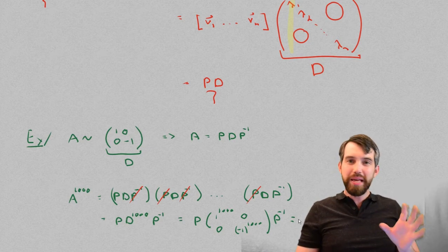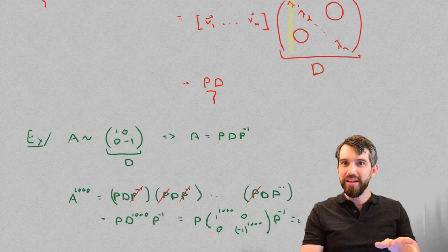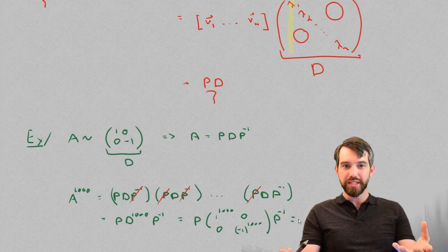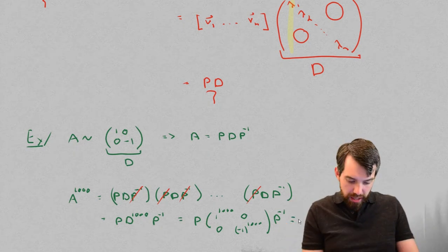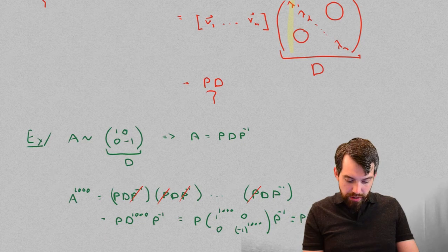So, in other words, P times identity, get rid of that, so it's just P times P inverse, and P times P inverse is the same thing as the identity matrix.